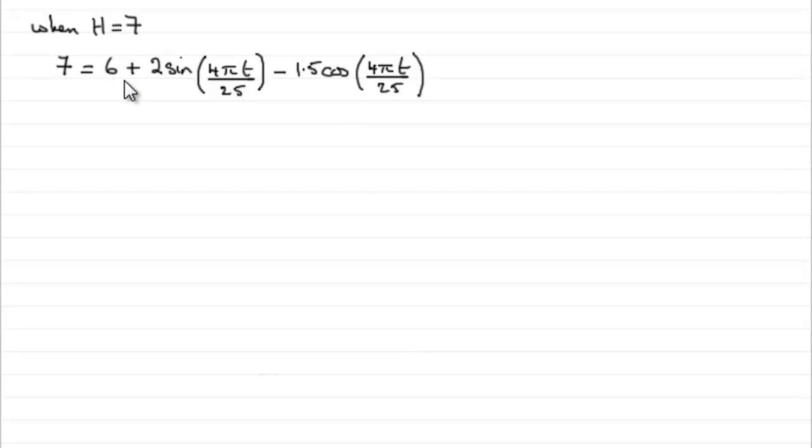So to solve this for t, we need to subtract 6 from both sides. So if we do that, 7 take away 6 is 1. I'm going to write it over here actually, you'll see why in a moment. So we get 1, and that leaves us with these two terms.